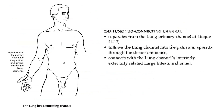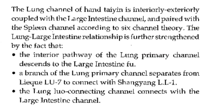Again, the lung luo-connecting channel separates from the lung primary channel at lung 7, follows the lung channel into the palm, and spreads through the thenar eminence. It connects with the lung channel's interiorly-exteriorly-related large intestine channel. The lung channel of Han Tai Yin is interiorly-exteriorly coupled with the large intestine channel and paired with the spleen channel according to six-channel theory.